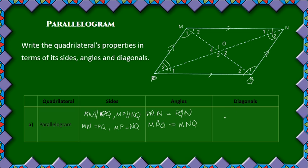And then for the diagonals of the parallelogram: the diagonals bisect each other. So we have that MO is equal to OQ, and PO is equal to ON.